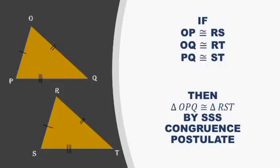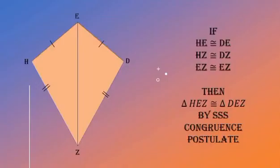Let us now have the first example. In our figure, we have triangle OPQ and triangle RST. Based on the markings, we have three markings on the sides. If side OP is congruent to side RS, side OQ is congruent to side RT, and side PQ is congruent to side ST, then triangle OPQ is congruent to triangle RST by SSS congruence postulate.